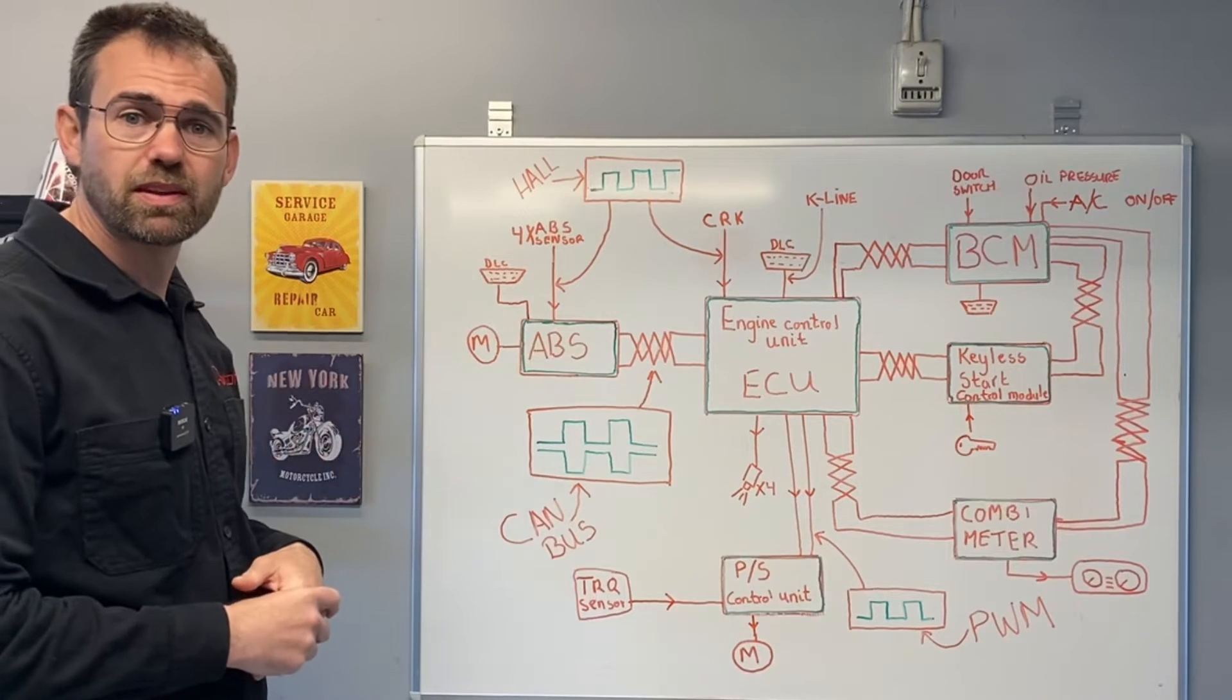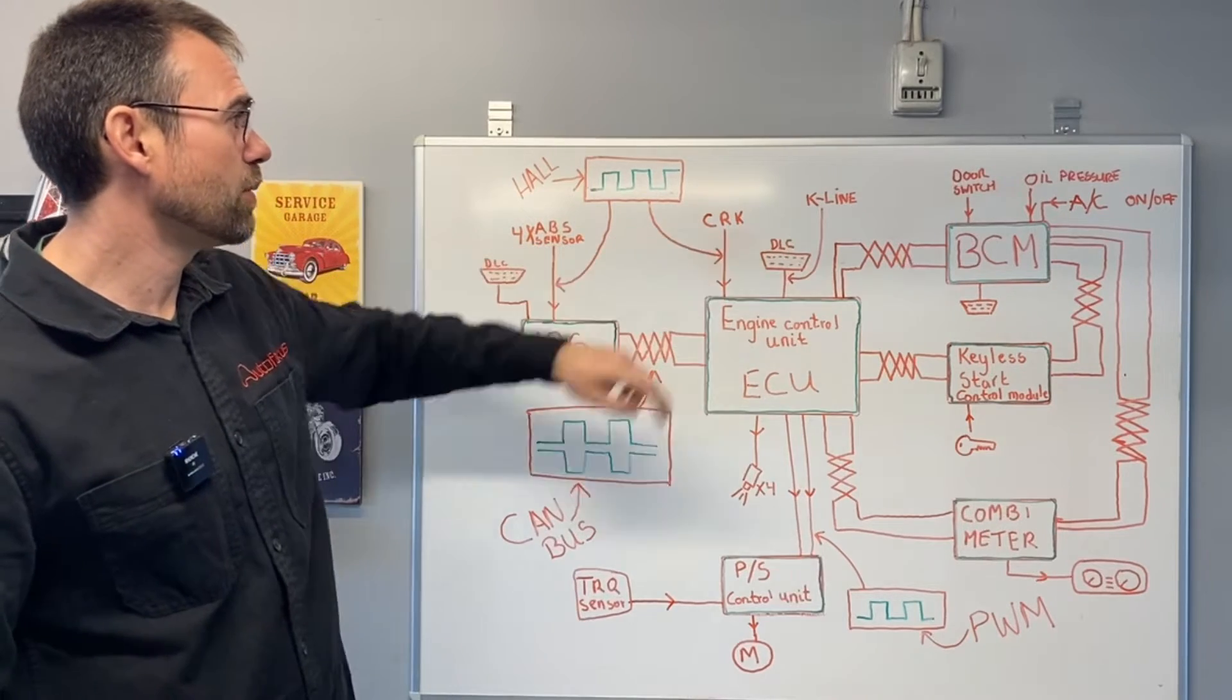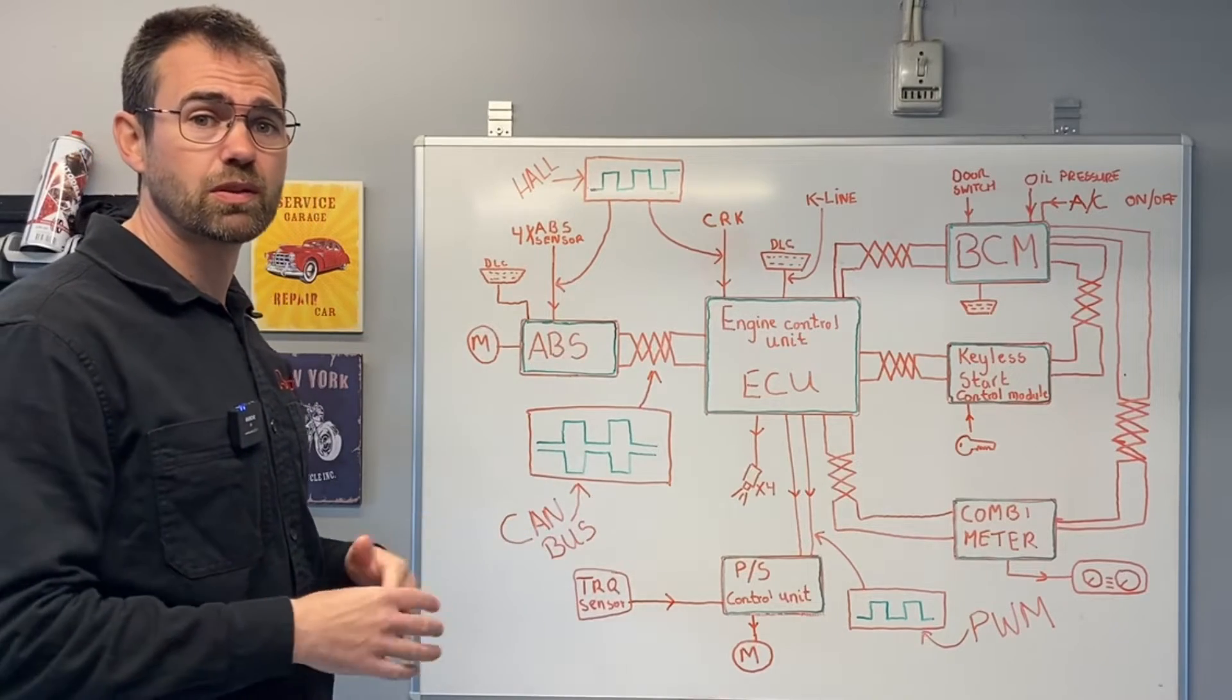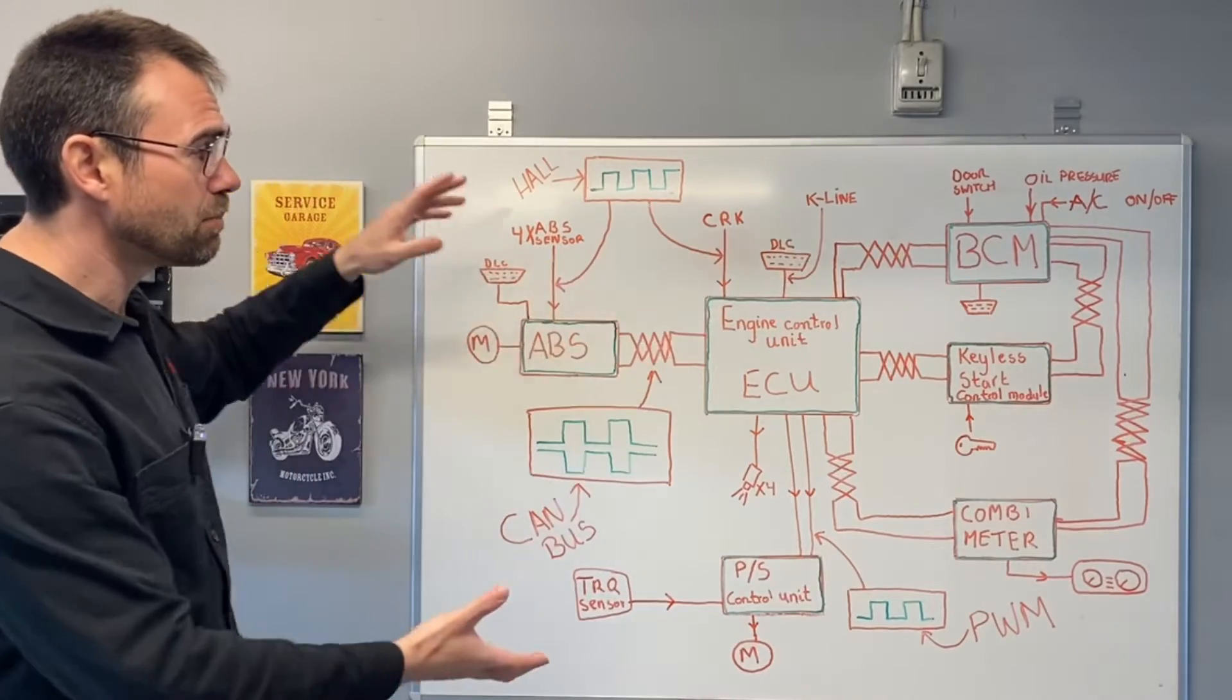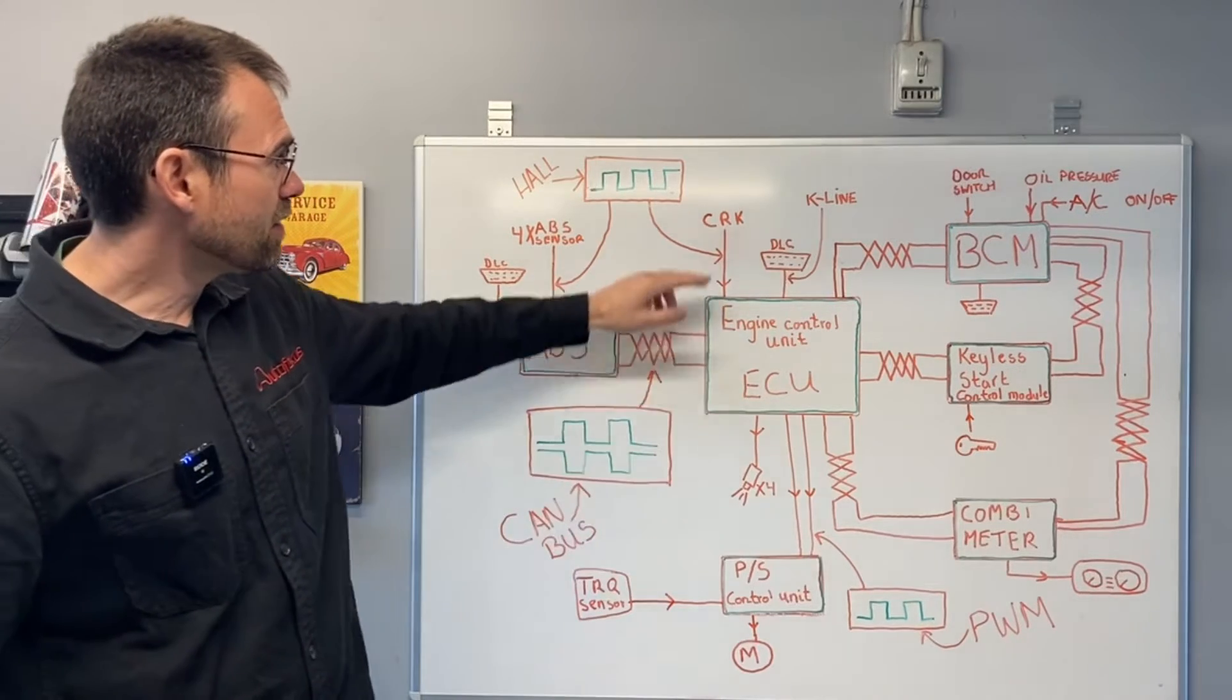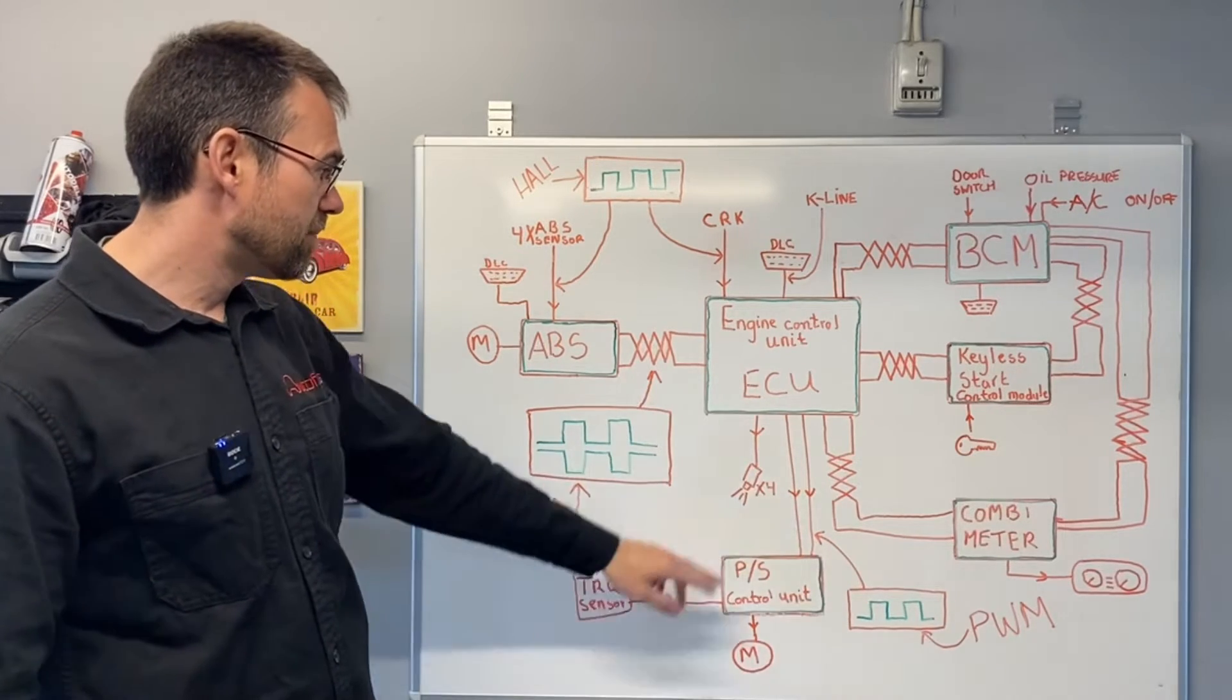It's the same for the engine control unit. I've just written it gets one input from the crank position sensor, but of course it gets multiple other inputs as well. It could be the coolant temperature, how much air is flowing into the engine—that's just an example. The blackboard is simply too small to put everything on it.